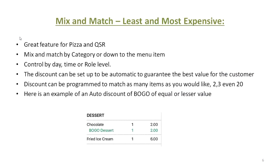Mix and match — least and most expensive. This is a great feature for pizza and QSR. Mix and match can be done by category or down to the menu item. You can control it by day, time, or even the role level, so you can manage your happy hour and it can just be for bartender access. These discounts can be set up to be automatic to guarantee the best value for your customer, or they can be manual. Discounts can be programmed to match as many items as possible. Here's a good example of an auto discount of a buy one get one free of equal or lesser value — two desserts were ordered and the automatic program took off the $2 automatically.